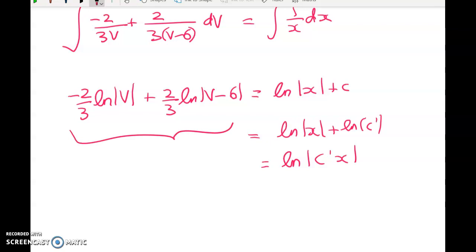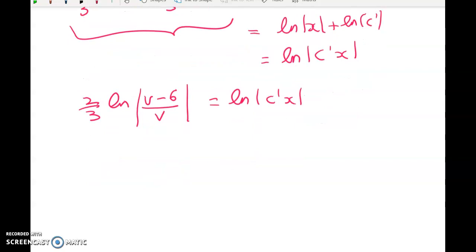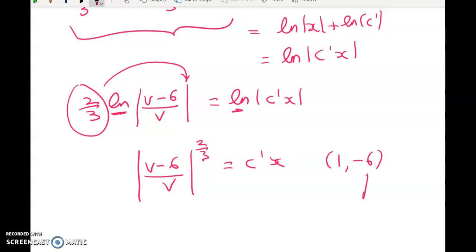So we're going to clean this up a little bit and then start substituting values in. So we get 2 thirds of the natural log of V minus 6 over V is equal to C dash of X. I've got natural logs here and here, so if I pop this up to here, we're good. We've got V minus 6 over V to the power of 2 thirds is equal to C dash of X. Now we were told that 1 negative 6 is on the curve, but remember that negative 6 is a Y value. So V is equal to Y over X. But we've done all the hard work now, so we might as well go back to working with our Y and X. So we'll substitute that back in now, because ultimately our job, remember, is to figure out,